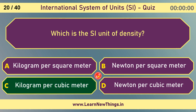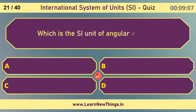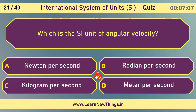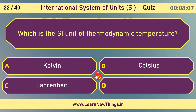Kilogram per cubic meter. Which is the SI unit of angular velocity? Radian per second. Which is the SI unit of thermodynamic temperature? Kelvin.